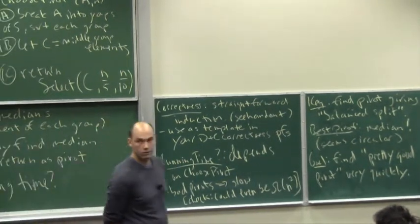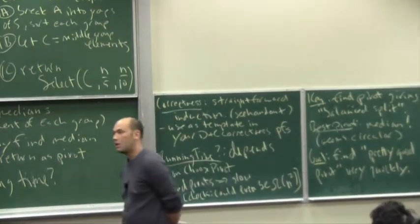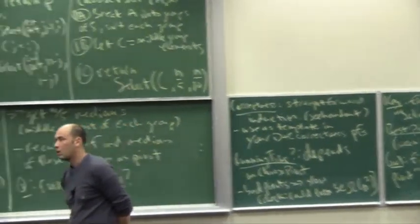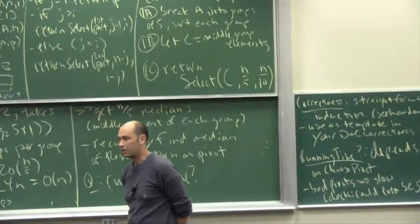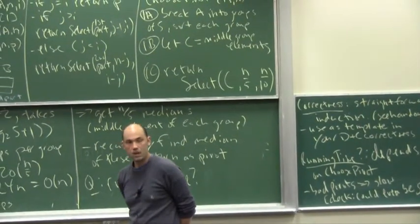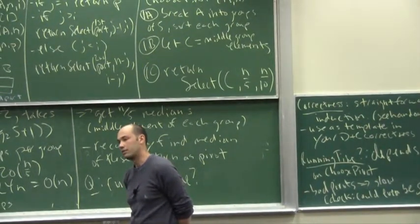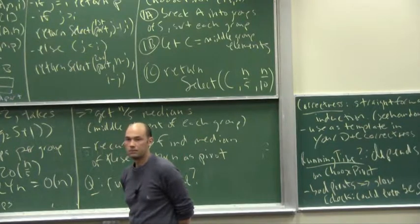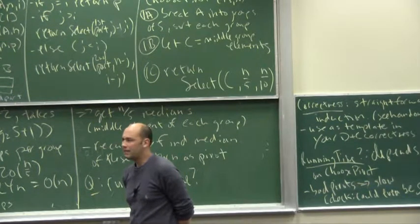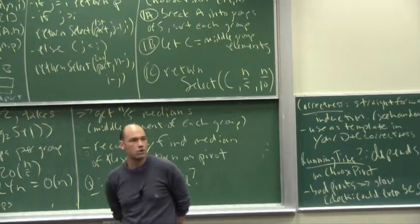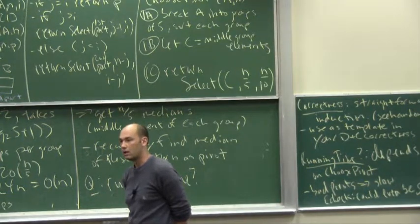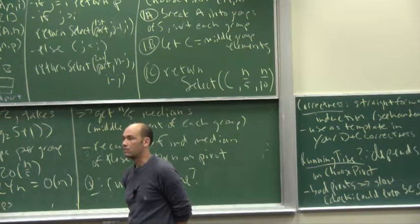So summarizing, we have five steps, three of which are not recursive calls and do linear work. Two of which are recursive calls to smaller sub-problems. So in essence, I mean, we could write down a recursion tree, for example, where we do linear work. We have a left child, we have a right child corresponding to two recursive calls, and so on.